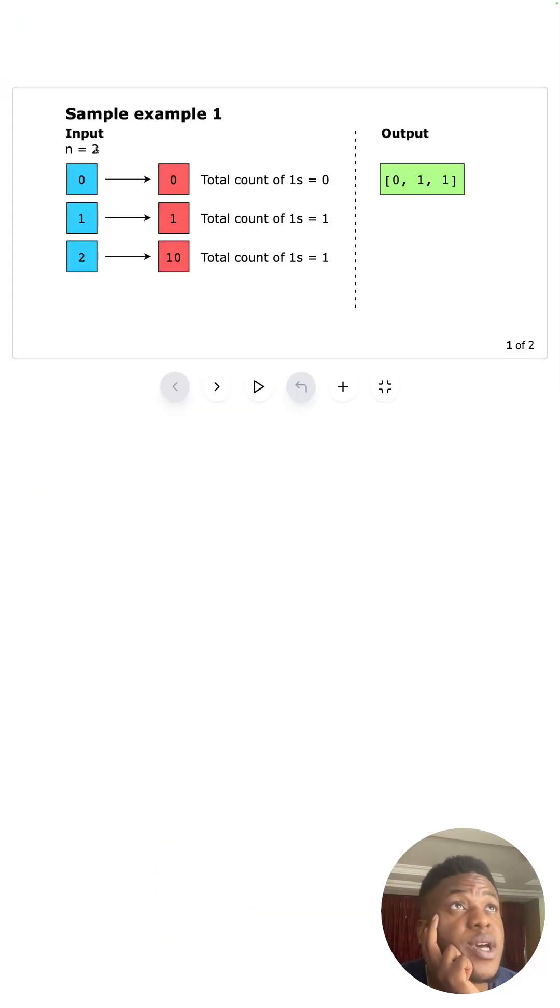We have n=2, so we go from 0, 1, and 2, and the binary representations are 0, 1, and 10. We count the number of ones in each step - there's one here, one here - so that's why we get [0, 1, 1].